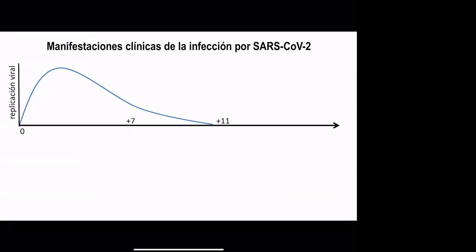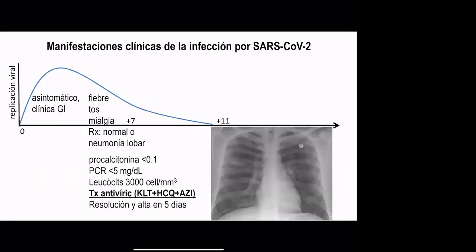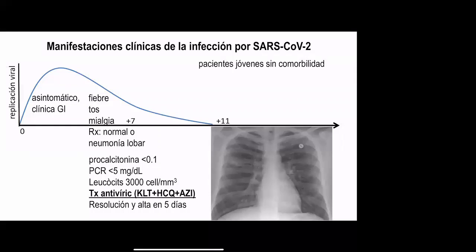The majority of patients develop a non-severe infection that in many cases is completely asymptomatic or presents with gastrointestinal manifestations, or most commonly fever, cough, and myalgia. The chest X-ray can be normal or show a small pneumonia in the upper lobe, with normal procalcitonin, low C-reactive protein, and low leukocyte counts. This patient was treated with antiviral agents including lopinavir/ritonavir, hydroxychloroquine, or azithromycin, and was discharged at day five with resolution of symptoms — typical for young people without comorbidity.